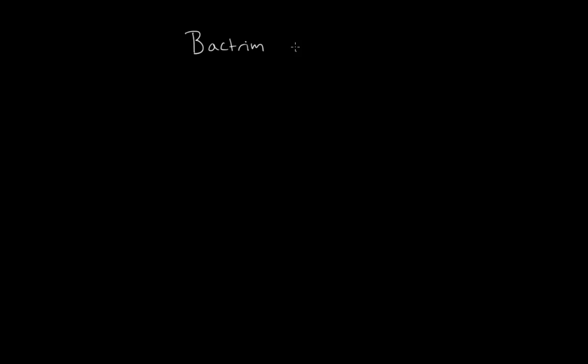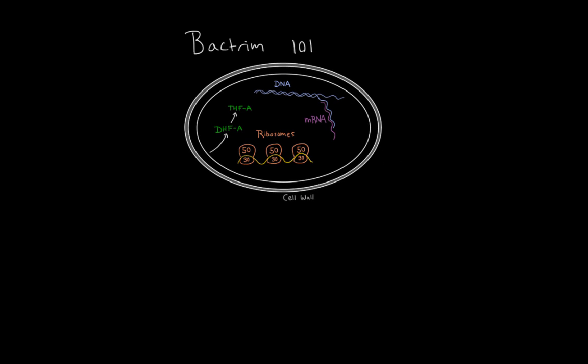Let's start with Bactrim 101 — the basics. A good place to start is how does it work. Antibiotics can mess with really any of the processes in a bacterium, and Bactrim in particular messes with folate metabolism — actually two steps in folate metabolism. That's why it has that double name, trimethoprim sulfamethoxazole; each does one of these steps. Bacteria need folate to make DNA and other things, so preferentially inhibiting bacterial folate synthesis will prevent bacterial growth.